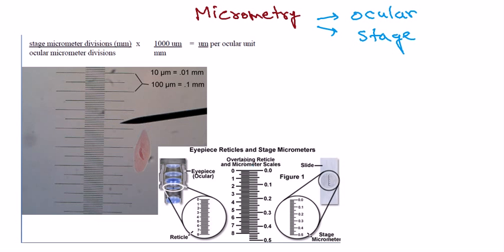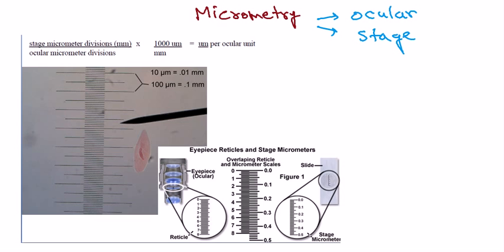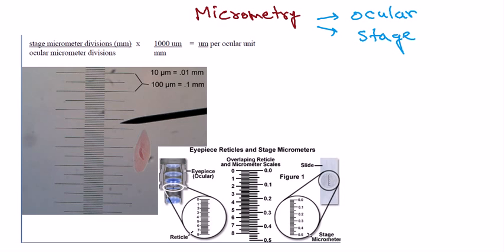We need to use these two different stages which are designed in such a way to measure microscopic organisms. The reason measuring microscopic organisms is very difficult is that different microscopes have different oculars, different types of magnification power, and different types of resolution. Those things vary from type of microscope to another type of microscope.